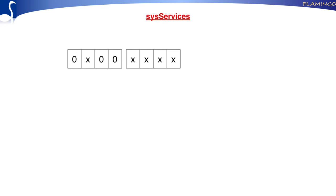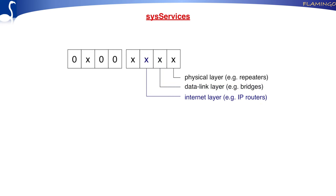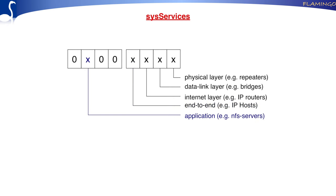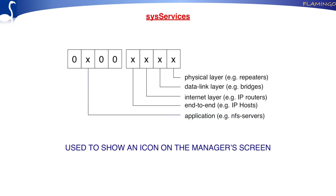sysServices is one byte with bits that can take specific values. If the last bit is set, it says the system has physical layer capabilities. If the second bit is set, it has data link capabilities. If the third is set, it has internet (IP level) capabilities. If the fourth is set, it has end-to-end capabilities. And if the fifth bit is set, it has application capabilities. A manager system with a graphical user interface can read this byte to know what kind of equipment it is, and thus display the appropriate icon on screen — that's quite helpful.